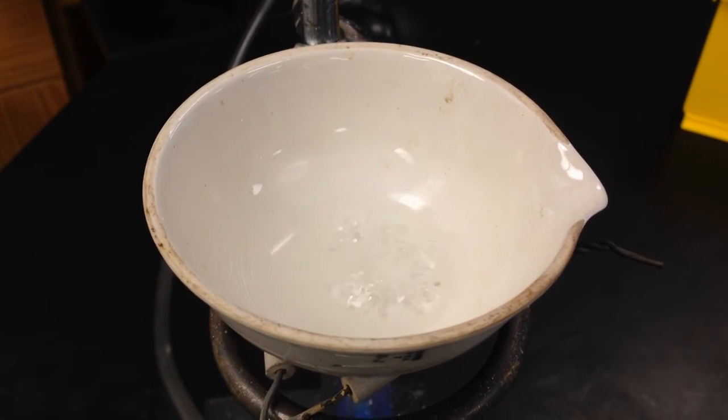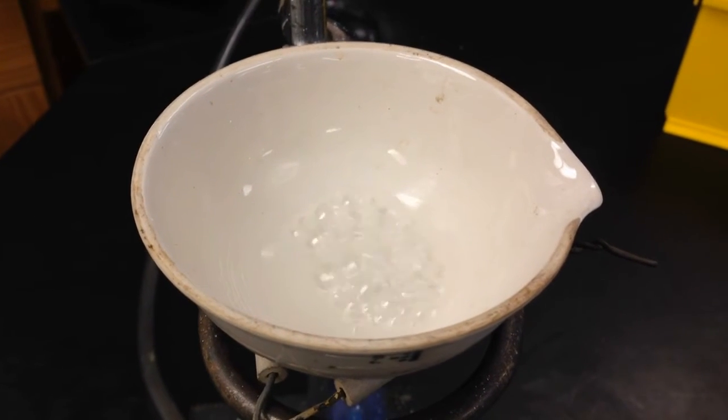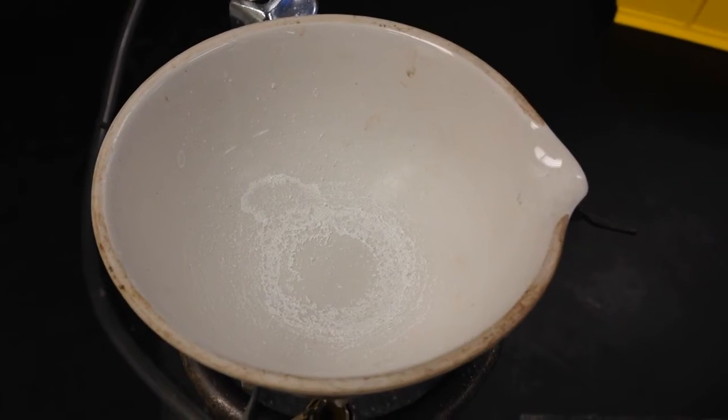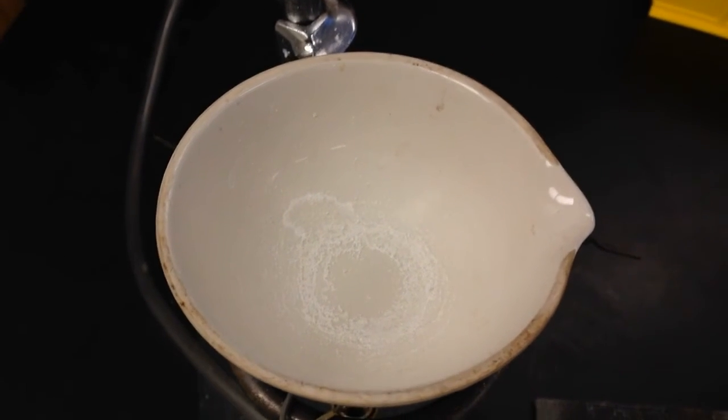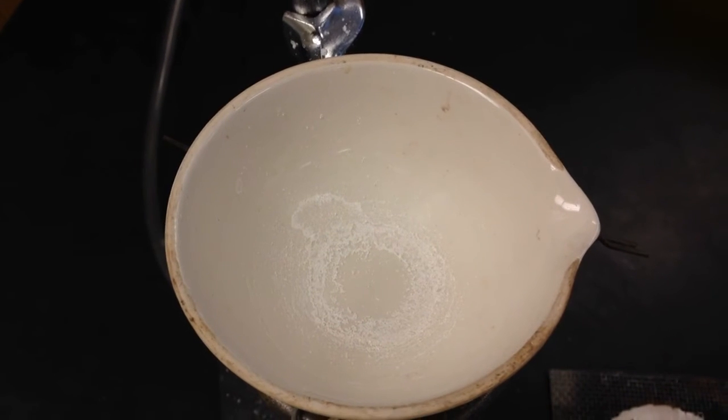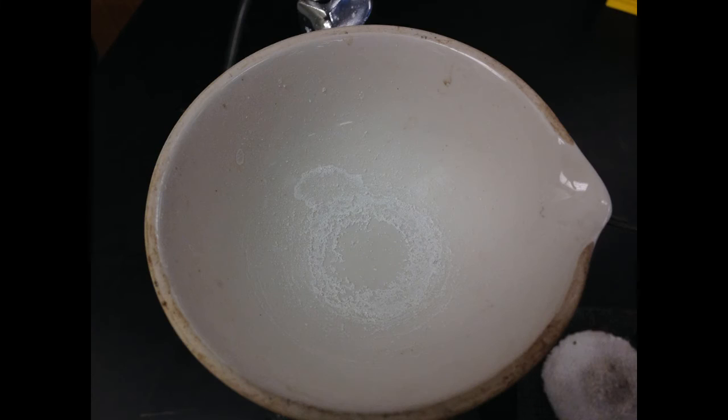And finally, we have the Bunsen burner heating the filtrate inside of the evaporation dish. And when all of the filtrate has been evaporated, the evaporating dish will look like so. Record any observations and then draw a particle picture of the contents of the evaporating dish.